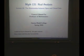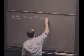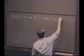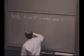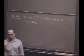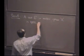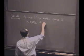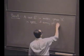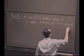Let's recall what it means for a set to be open. A set E in a metric space X is open — what does that mean? It's open if every point is an interior point. That's a rather curious definition.